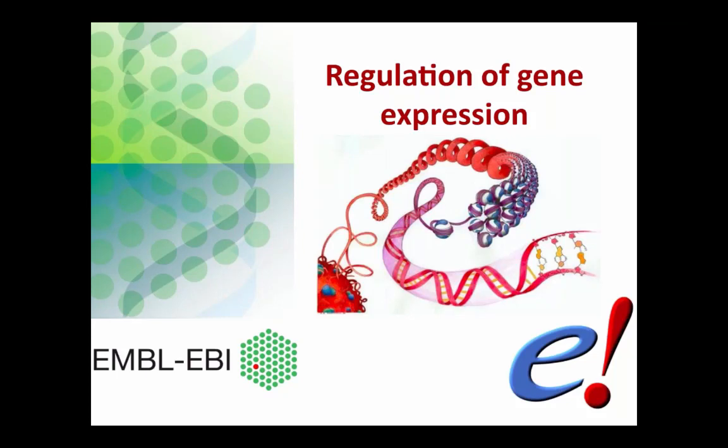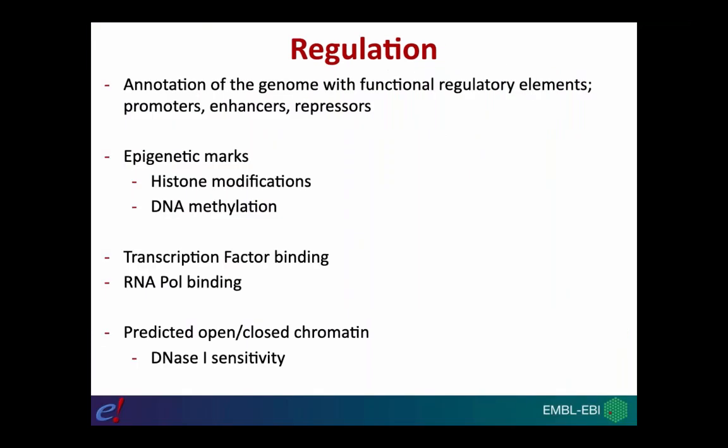What we want to do today is explore the annotation of regulatory features and how to find information about those features in the Ensembl genome browser. Within Ensembl, we annotate the genome with functional regulatory elements, which typically consist of features such as promoters, enhancers, and repressors.